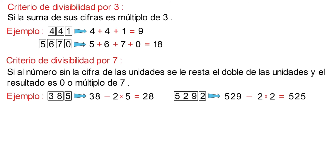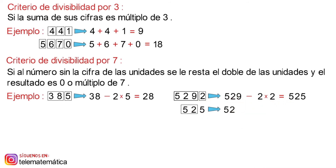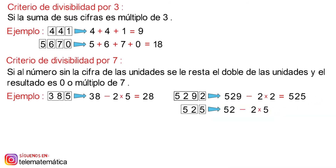Ahora bien, como este número todavía es grande, podemos repetir el procedimiento para este valor. Donde 52 menos 2 que multiplica a la cifra de las unidades que es 5, y resolviendo las operaciones esto es igual a 42. Y este valor es múltiplo de 7, ya que 7 por 6 es igual a 42.